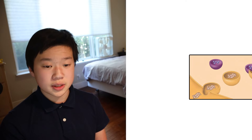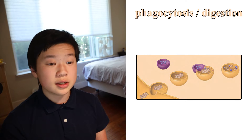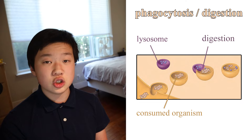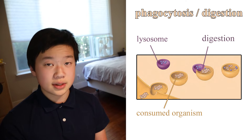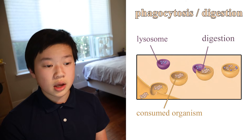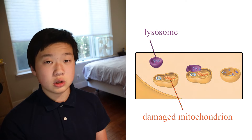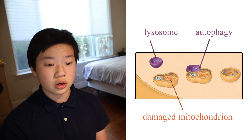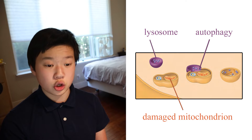When a cell carries out phagocytosis, or the process of engulfing a smaller organism, lysosomes break the consumed organism down and pass its nutrients into the cytosol. Additionally, lysosomes break down the cell's own defunct organelles into usable nutrients in a process called autophagy. Autophagy allows a cell to constantly renew itself.